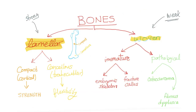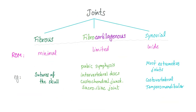Bones are either lamellar or woven. Lamellar bones are the strong, normal bones. Woven bones are not normal — they may be normal in children, or they may be pathological. Lamellar, the normal adult bone, can be compact or trabecular. Woven bone can be immature, such as embryonic skeleton and fracture callus, or pathological, such as osteosarcoma and fibrous dysplasia.